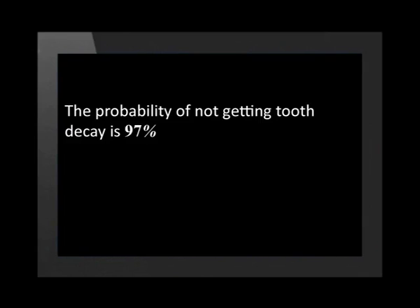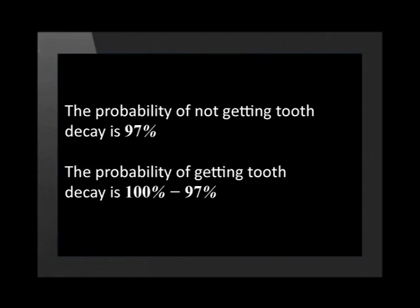The probability of not getting tooth decay is 97%, or 97 divided by 100. The probability of getting tooth decay is 100% minus 97%. Therefore, the probability of getting tooth decay while using this toothpaste is equal to 3%. This means that 3 in every 100 people will have tooth decay after using the toothpaste.